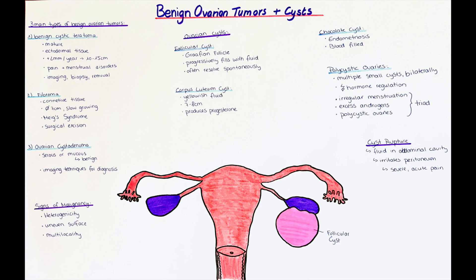The ovaries are a paired organ and they consist of epithelium, stroma, and gonadal cells. This variety in cells gives the possibility for many different types of tumors to form.